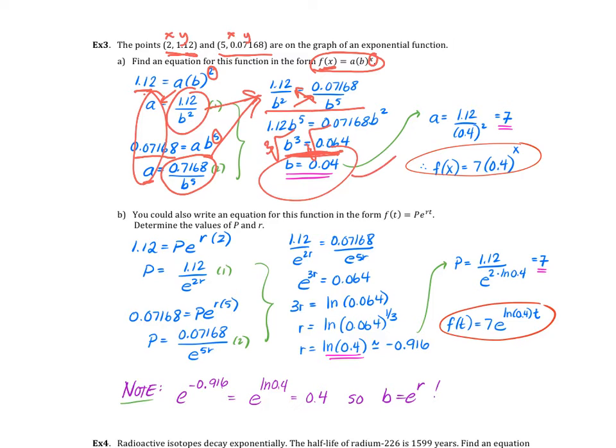When I plug that back in to find my a value, because remember what are we trying to do? We're trying to find our a value and our b value. So when I plug it back in, I have my b, I substitute that in, now I have to find my a value. I plug it into one of those original points, use a point and plug it into your function to get your a value. Now we have our a and our b. My final equation is 7 times 0.4 to the power of x.